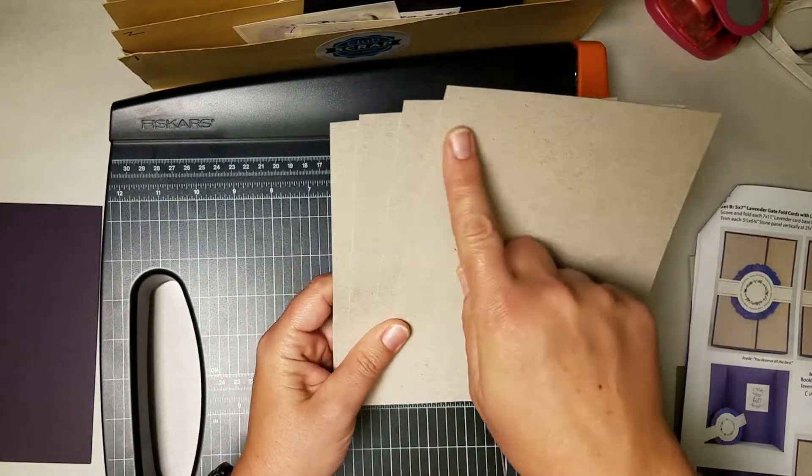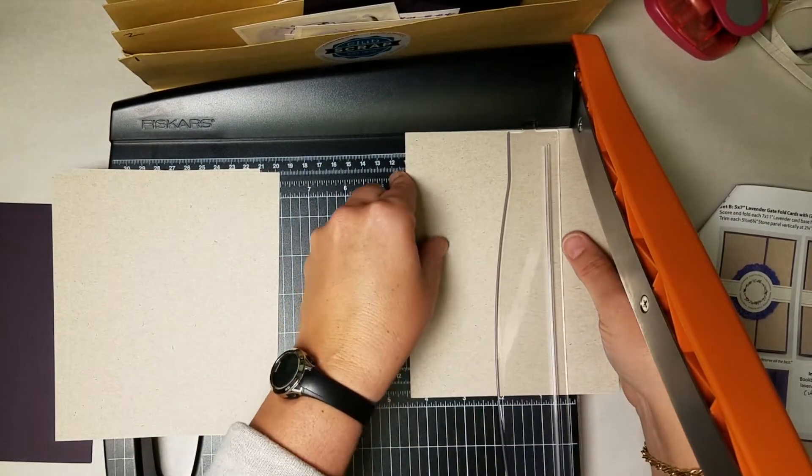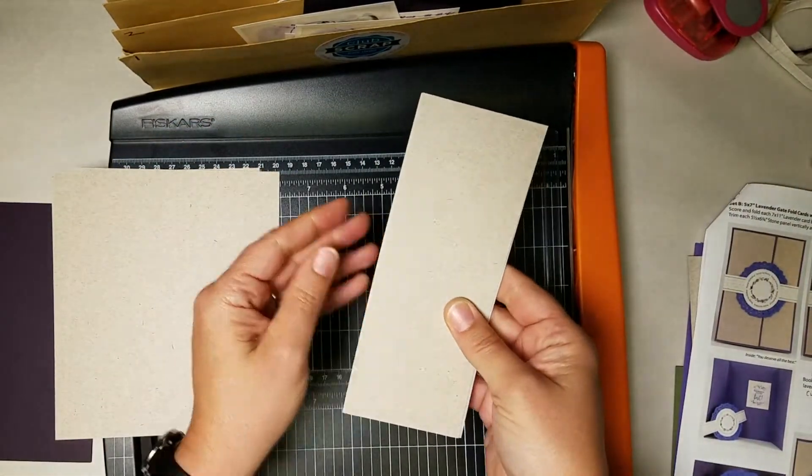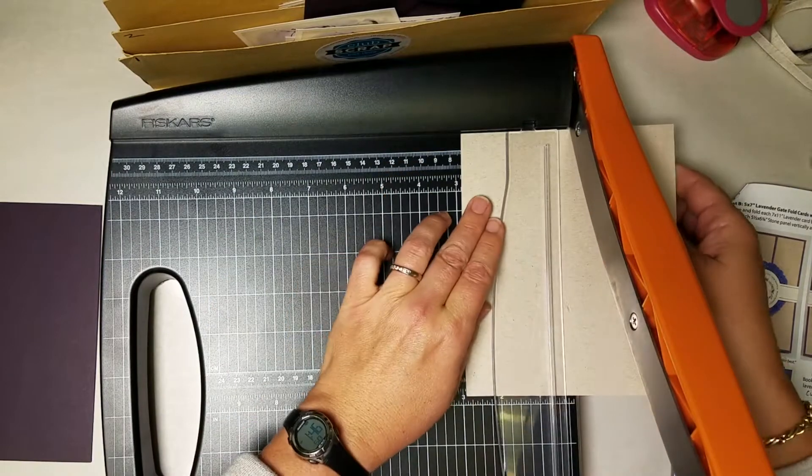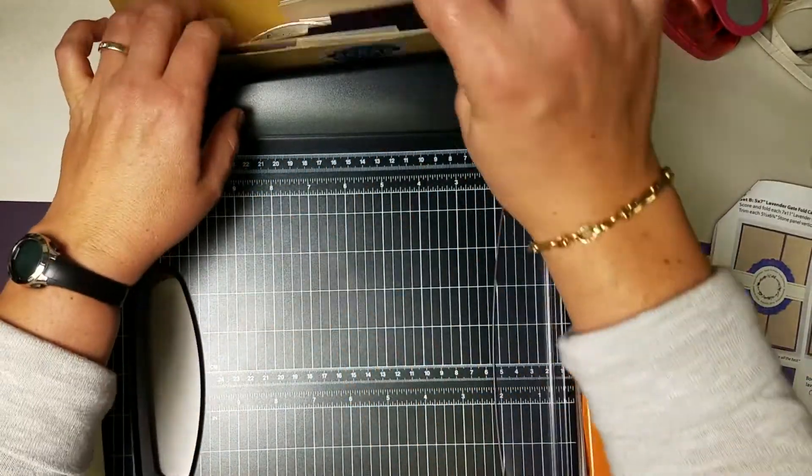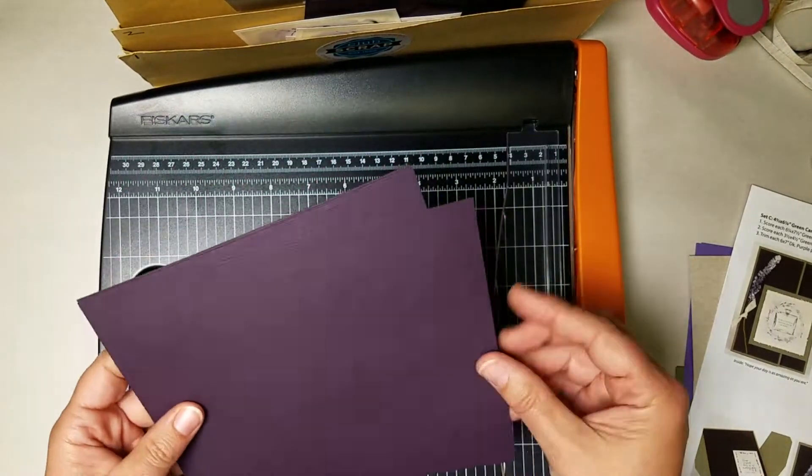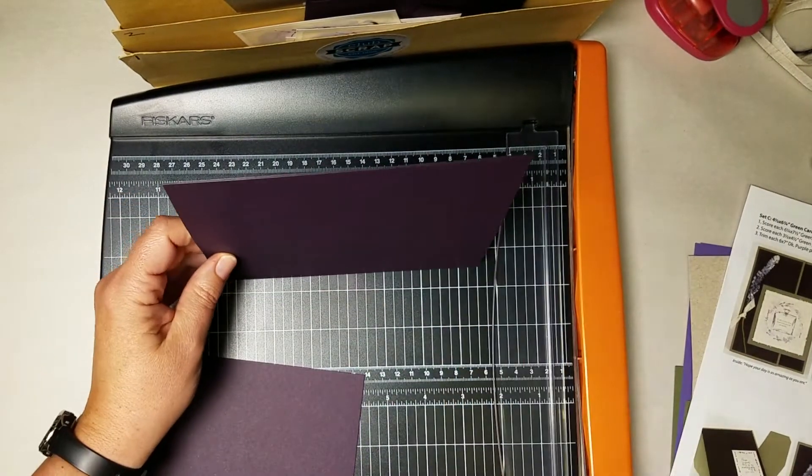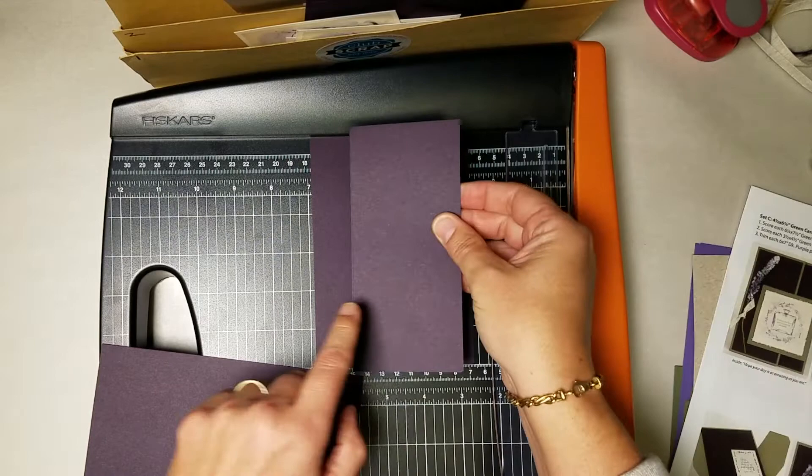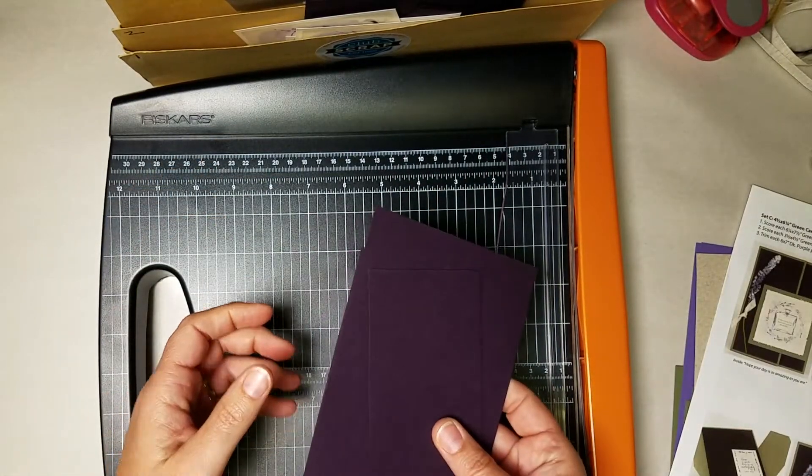Next you have some stone panels. It's a pretty big rectangle. We're going to cut these vertically, so place two at a time if you'd like in your trimmer and we'll cut at two and three-quarters. This should make equally sized panels and that will be used in card set B. Repeat that for the other pair. Finally you have a six by seven inch dark purple panel. We will trim this horizontally at four and a quarter. That makes a wide nesting panel and a narrow panel. All of this gets filed in pocket C.